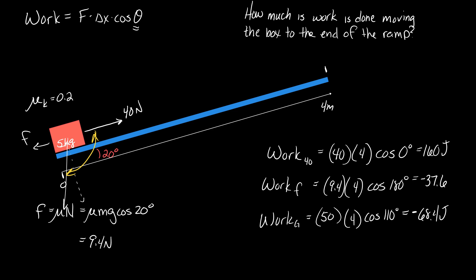Total work is just the sum of all those things. So if I want how much work is done moving the box to the end of the ramp, I just add all those things up. I believe you get, like, 54 joules.